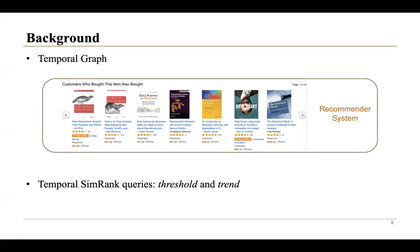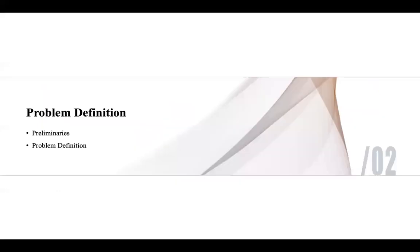Sometimes the similarity between user U and V is high at the current time instant, but their similarity reduces. Thus, it may not be worthwhile to recommend U's interest items to V. Therefore, in this paper, we design an efficient algorithm, CrashSim, that can support the SimRank computation on both static and temporal graphs.